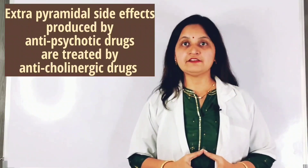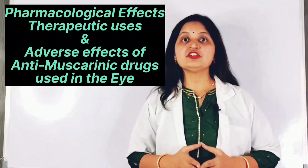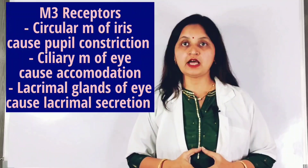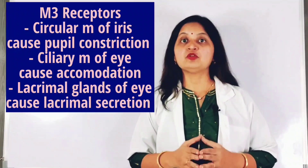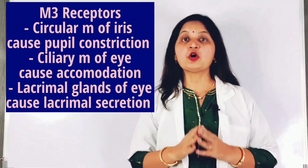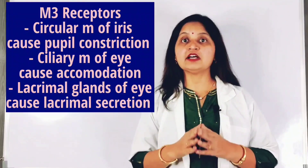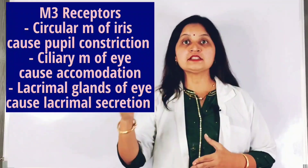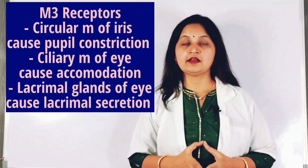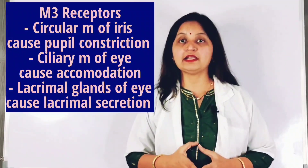Regarding pharmacological effects on the eye: cholinergic receptors, particularly M3 muscarinic receptors, are located in the circular muscle of the iris causing pupil constriction, in the ciliary muscle responsible for accommodation, and in the lacrimal glands increasing lacrimal secretions. Accommodation is the ability of the eye to change focus from distant to near vision by changing the shape of the lens.